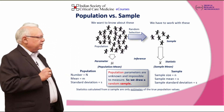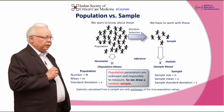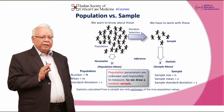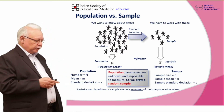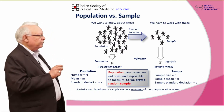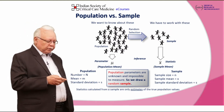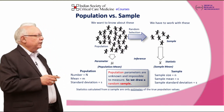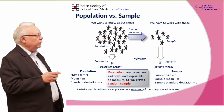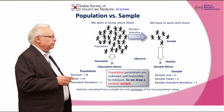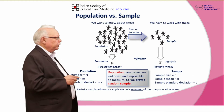The sample mean is x and sample standard deviation is s. So the statistics calculated from a sample are only estimates of the true population values. We need to be very clear that whenever we are studying, we are studying a sample and we are going to infer from the sample about the entire population.